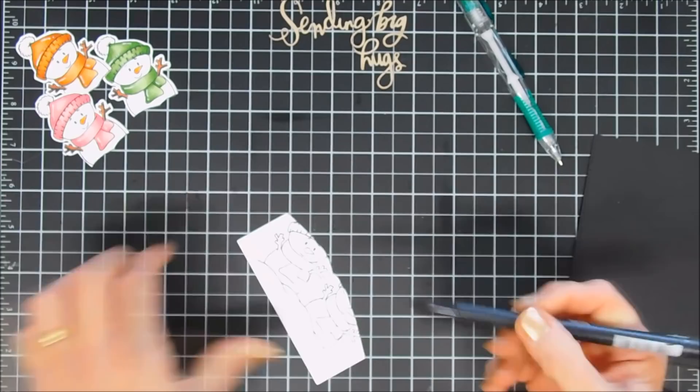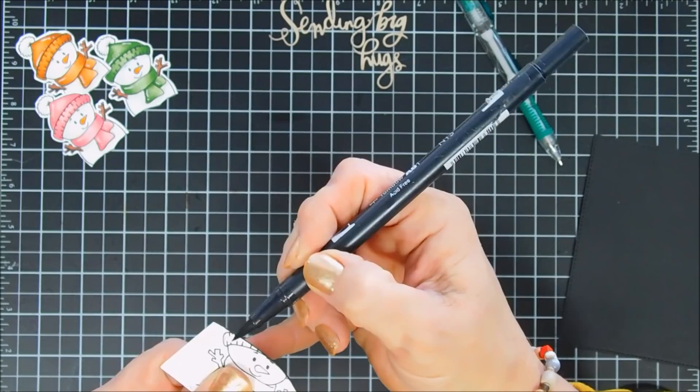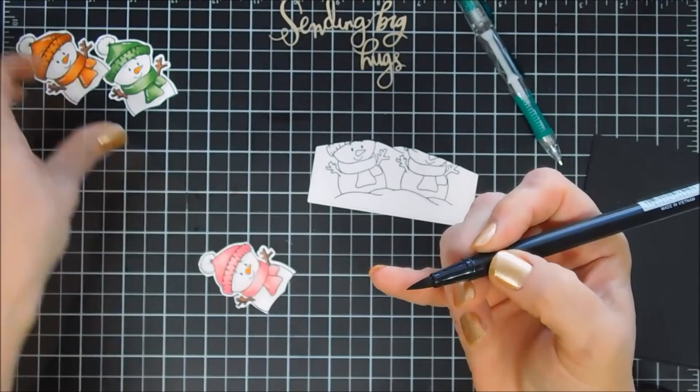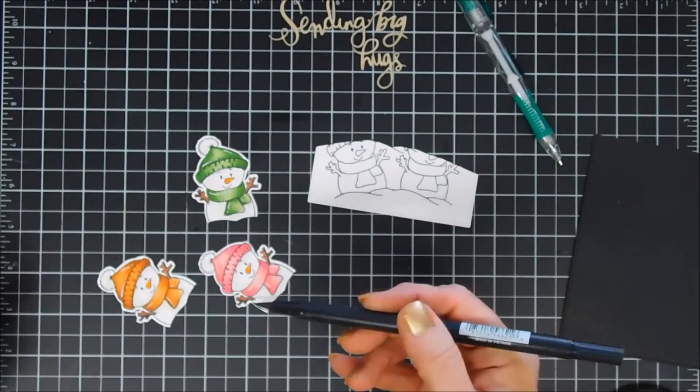Now to give it a finished clean look I'm taking my black marker and I'm going to go over it, just continuing that black snowbank line all across the left and the right and then also on the bottom of each one of my snowmen we're going to clean that up as well.